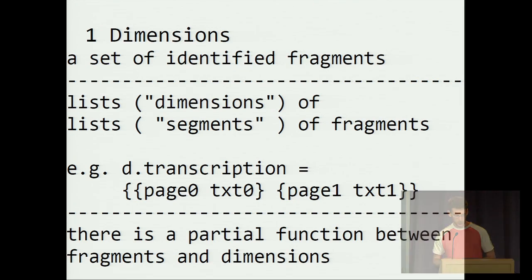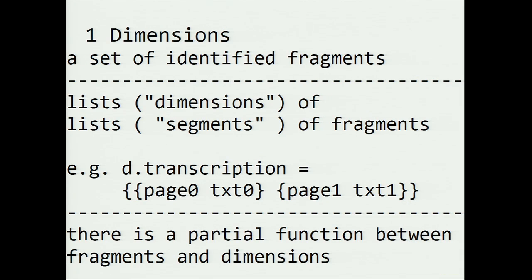Now, more formally, we work with a set of identified fragments, we just have seen some examples of them, and then we have lists of lists of fragments. This is the basic structure. These lists, we call dimensions, and the list inside we call segments. For example, on the transcription dimension, we have a first list with two fragments, a page and its transcription, then a second list with a page and its transcription, etc.